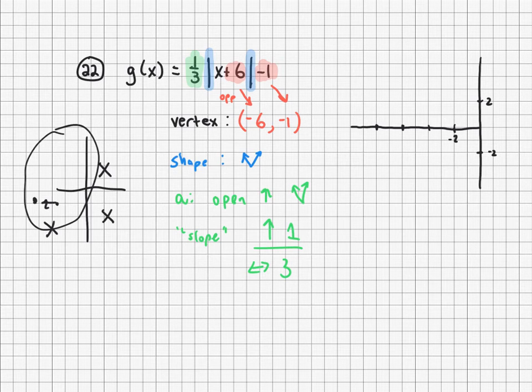Now, so where's my vertex? Negative 6, negative 1 lives right here. Okay, boom. Done. Now, here's where I'm showing my work. I'm doing this right here.